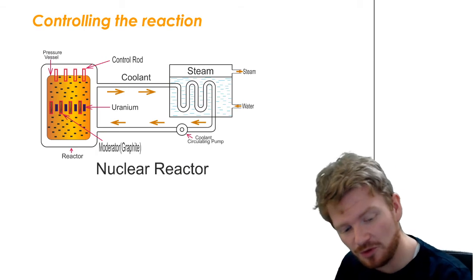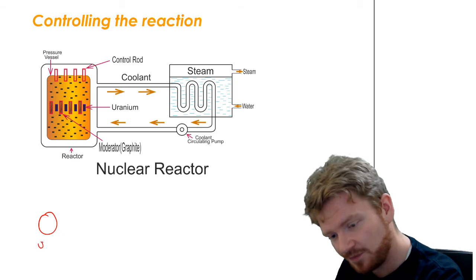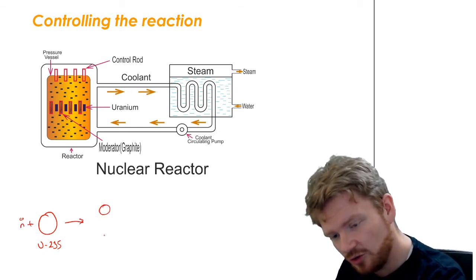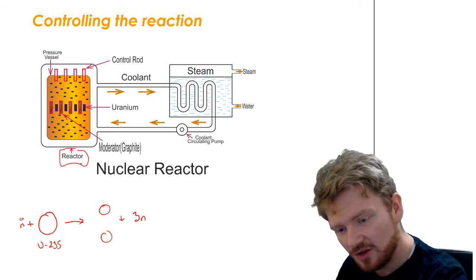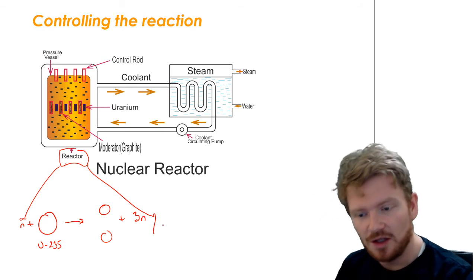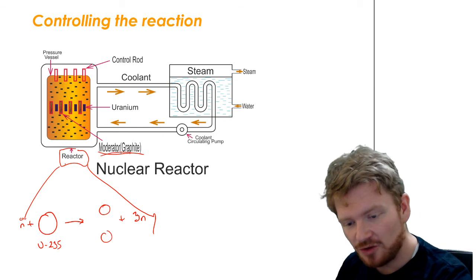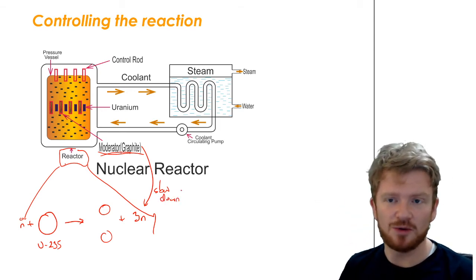So if you remember what's going on inside the reactor, we have uranium-235. That's absorbing a neutron, and that is becoming two daughter nuclei and three neutrons. Now all of that is happening inside the reactor. We also have the moderator in there, because the moderator will slow down those three neutrons, making them slow enough to be absorbed.